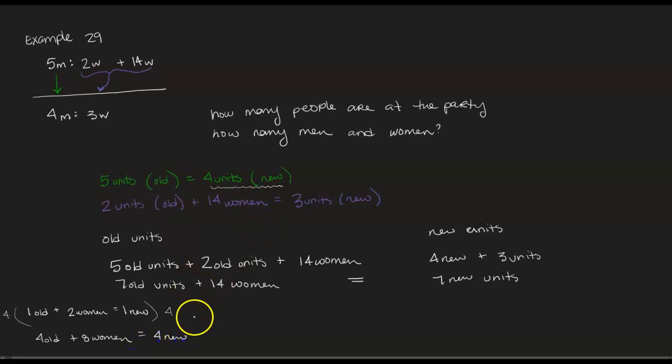And then the four new I can replace with the five old units. So four old units plus eight women is equal to five old. Because I can combine the old units, they're the same type of grouping, I can subtract four from both sides. And I can see eight women make up one old unit. Now an old unit doesn't have to be men or women, but we can now see that one old unit was eight people.